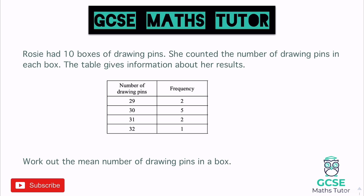This question says Rosie has 10 boxes of drawing pins. She counted the number of drawing pins in each box and the table gives some information about her results. We can see boxes with 29 drawing pins - there were two of those; 30 drawing pins - there were five; 31 drawing pins - there were two; and 32 drawing pins - there was only one. It says work out the mean number of drawing pins in a box.